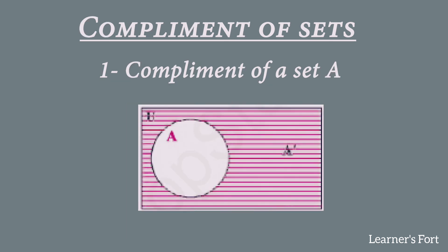Now let's talk about the complement of a set. The complement of a set is the relationship between the universal set and the set itself — A complement equals U minus A. We draw only set A inside the rectangle; no other set is involved. Since we are subtracting the elements of A from the universal set, we shade the entire universal set rectangle excluding the area where set A is drawn. This shaded area represents A complement.